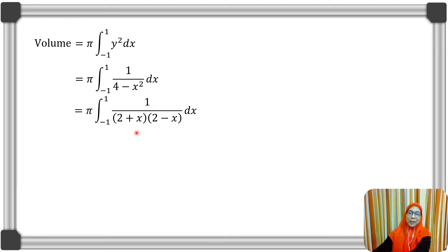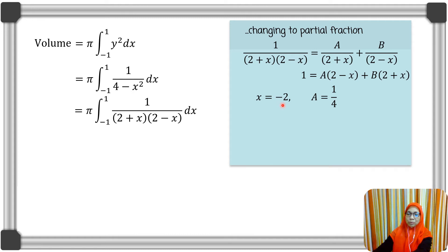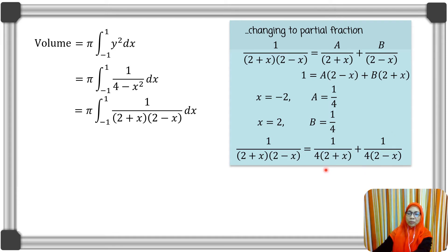We have 1 over (2 + x)(2 - x). We decompose into partial fractions of the form A over (2 + x) plus B over (2 - x), since the denominator consists of two linear factors. Multiplying both sides by (2 + x)(2 - x), we get 1 = A(2 - x) + B(2 + x). Substituting x = -2, A = 1/4. Substituting x = 2, B = 1/4. Thus the partial fraction is (1/4)(1/(2 + x)) + (1/4)(1/(2 - x)).